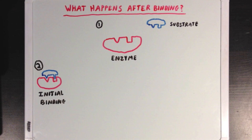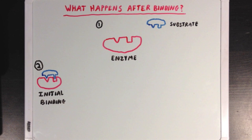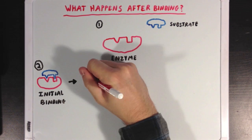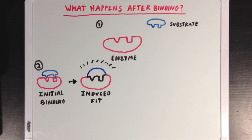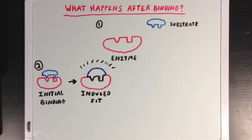Enzymes and substrates don't actually fit together quite like puzzle pieces. They actually work more like two pieces of clay that will both mold together so that the fit is much tighter. In our next step — stage 3 — the enzyme and the substrate will both change shape a little bit and bind to each other really strongly. We call this the induced fit, because both the enzyme and the substrate have changed their shape so that they bind together really tightly, and it's at this point where the reaction that the enzyme is catalyzing is at full force.